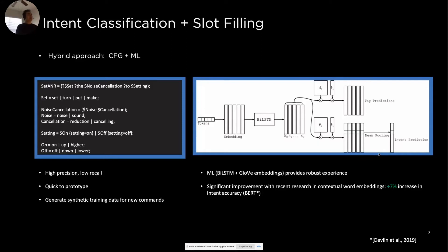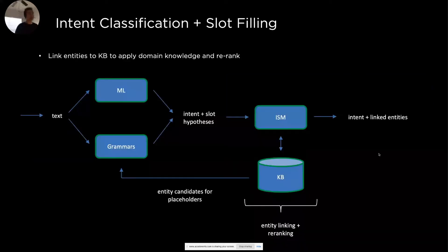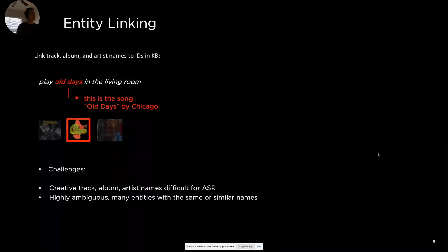The real challenge in the music domain is the ambiguity for entities, especially in entity linking. For instance, 'play old bass' — presumably the user wants 'Old Bass' by Chicago Sound. But in music, track, album, and artist names are very difficult for ASR and highly ambiguous — many entities share the same or similar names. Creative track and album names make ASR difficult. There are also alternative spellings and tracks with very similar names but slight spelling differences.